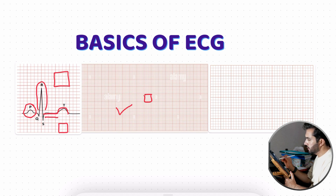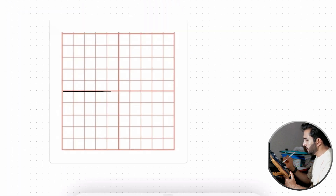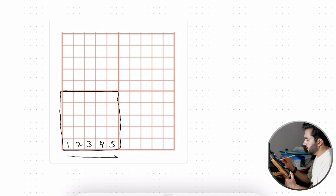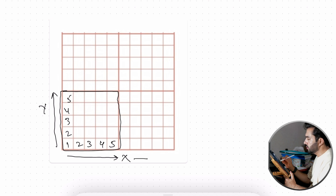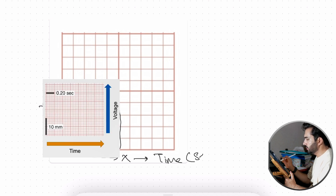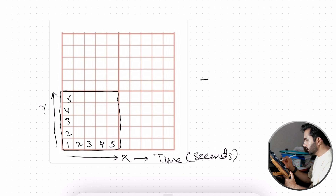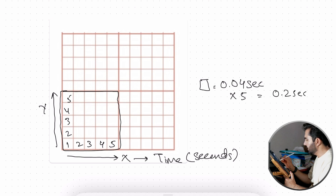So the ECG — each wave, its length and height — relates to the boxes on the paper. Each big box contains 5 small boxes. Horizontally, 5 small boxes make one big box. Vertically, 5 small boxes also make one big box. The time unit is seconds: each small box equals 0.04 seconds.